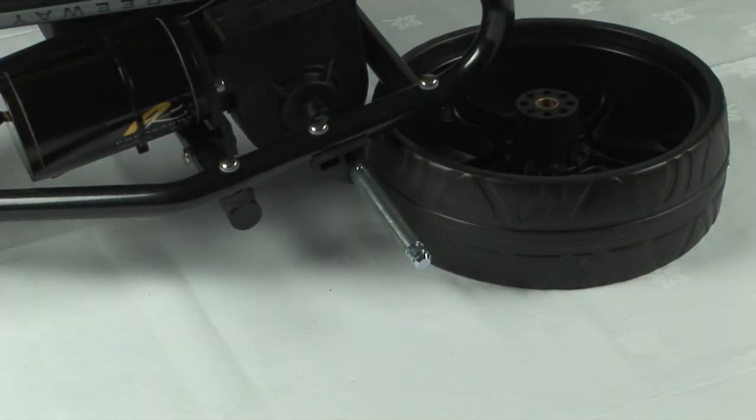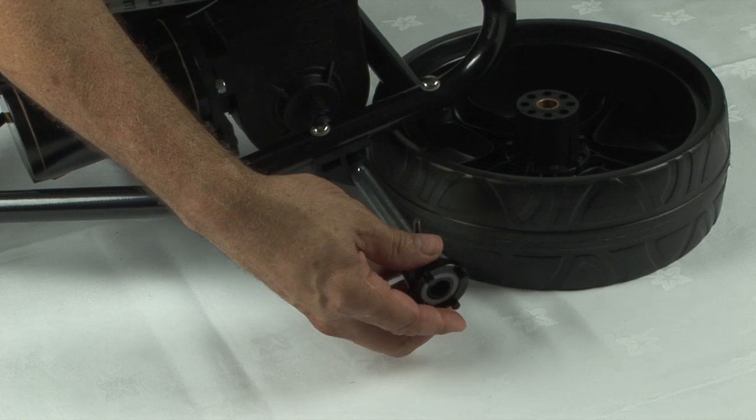Step 4: Slide the new clutch on and attach to the axle with the new pin supplied.